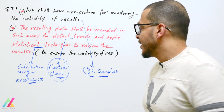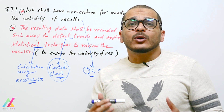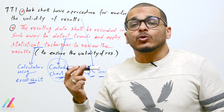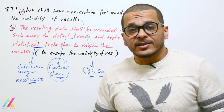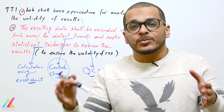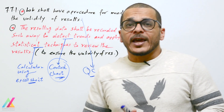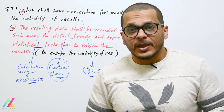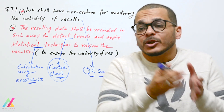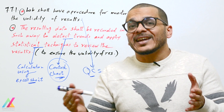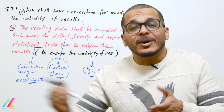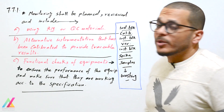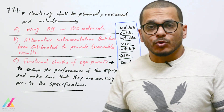Quality control samples run with every sequence include blank samples, spike samples, calibration standards, and verification standards. All of these should be within the acceptable range according to the guideline used. Control charts are among the most important QC tools to detect trends over a long period of time and identify any problems in lab activity. Monitoring shall be planned and reviewed.